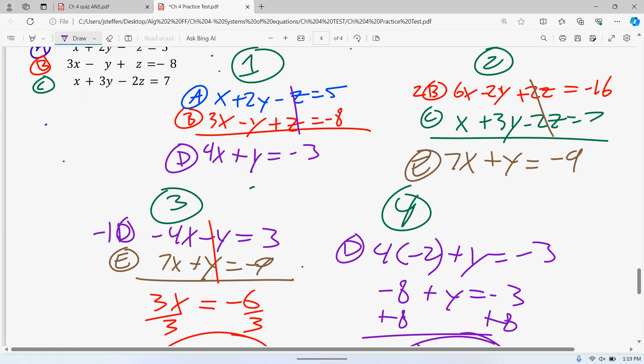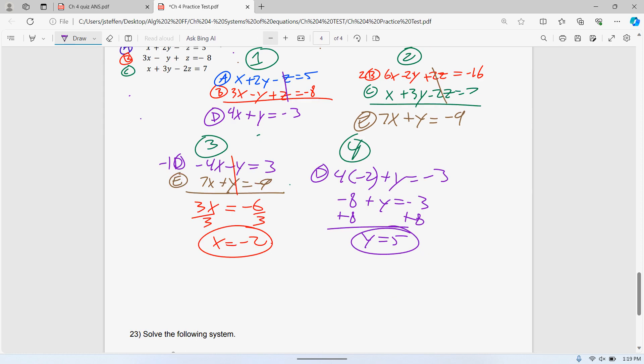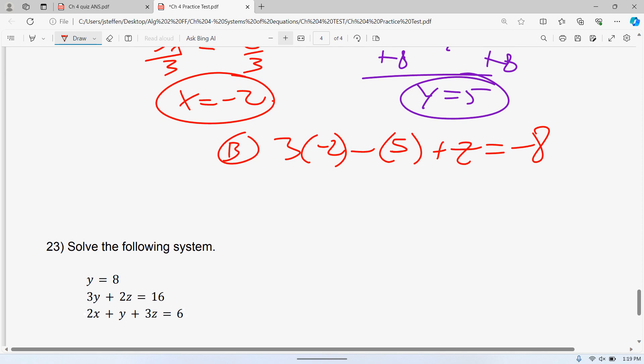That's our Z. That's what we canceled in the beginning. And so, again, it doesn't matter which equation you use. Whichever you think is going to be easiest. I'm going to pick equation B. For B, I have 3 times negative 2, minus Y plus Z is equal to negative 8. And now I need to solve that for Z. So that's negative 6 minus 5, plus Z equals negative 8. Negative 6 minus 5 is negative 11. Add 11 to both sides. I get Z is equal to positive 3. We have negative 2, positive 5, and positive 3.